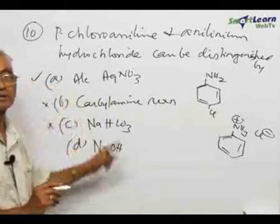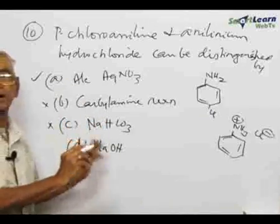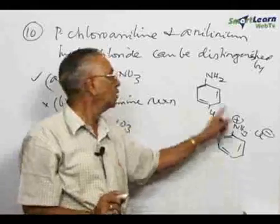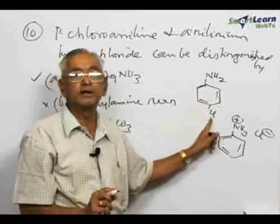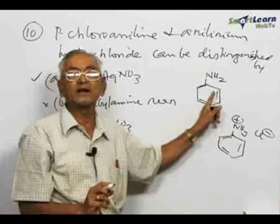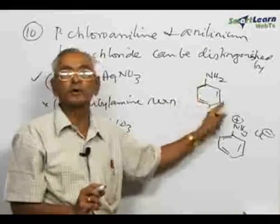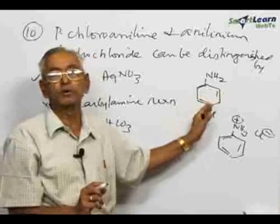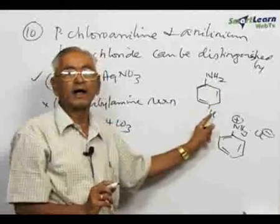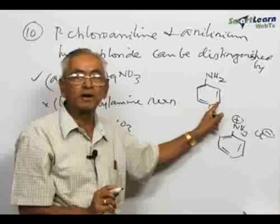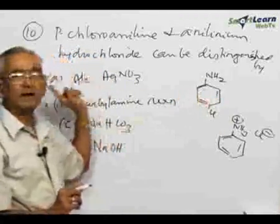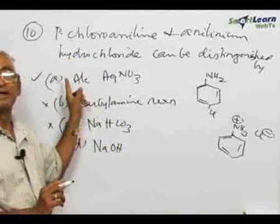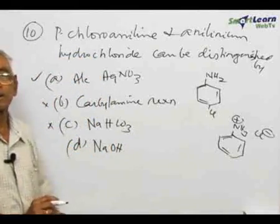So the only correct choice is alcoholic silver nitrate. When you add alcoholic silver nitrate, a white precipitate will be produced by anilinium hydrochloride, but no white precipitate will be produced by parachloroaniline, because this is a nuclear halogen. A halogen attached directly to the benzene nucleus — whether bromine, iodine, or chlorine — will not produce a precipitate. Therefore, alcoholic silver nitrate is the best reagent to distinguish between the two, and the correct choice is option A.